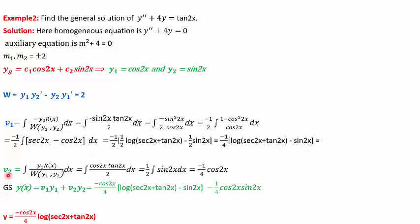Similarly, we find v2. It is a simpler integral: y1 = cos(2x), r(x) = tan(2x), and W = 2. The integral comes out to be −(1/4)·cos(2x). Substituting v1, y1, v2, and y2 into the general solution y = v1·y1 + v2·y2, we get the solution y = −(cos(2x)/4)·log|sec(2x) + tan(2x)|.